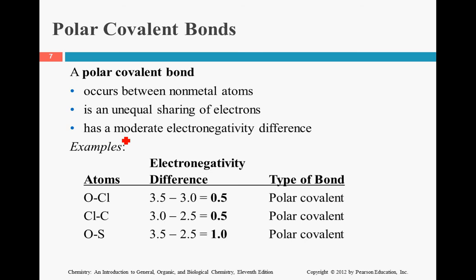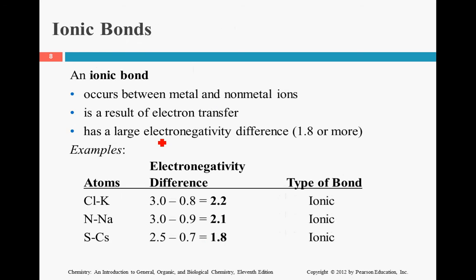So polar is between non-metal. Notice that these are all different. It's not chlorine and chlorine. It's chlorine and oxygen. So that means that the electronegativities are going to be different. They're all above 0.4. So there's going to be a small, a moderate, a medium level electronegativity. And then ionic, the difference is going to be rather large. It's going to be above a 1.8. Note that sulfur and cesium is right at the cusp.